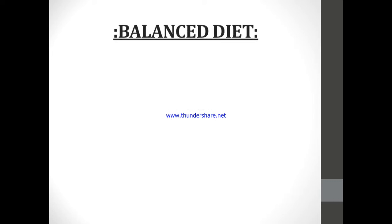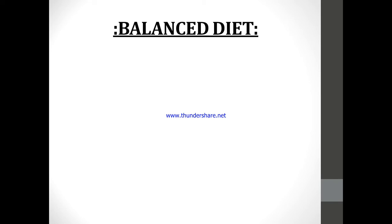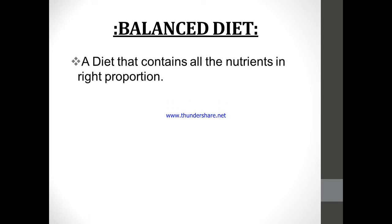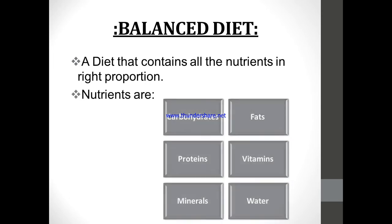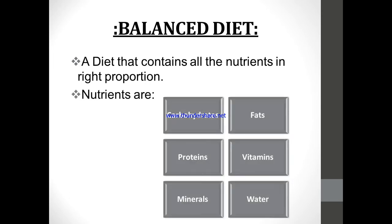The first topic we are going to discuss is balanced diet. What is a balanced diet? A balanced diet is a diet that contains all nutrients in the right proportion. As you already know, we have six nutrients: carbohydrates, fats, proteins, vitamins, minerals, and water. All of these should be present in our diet — then that diet will be a balanced diet.